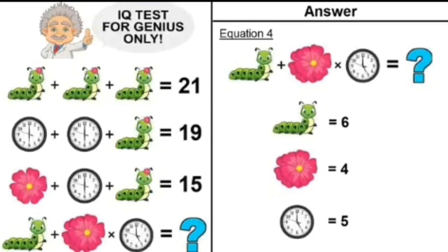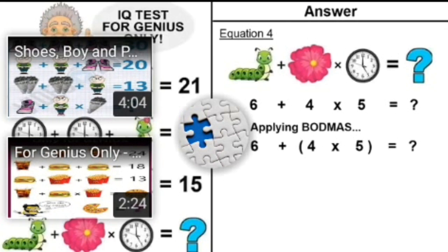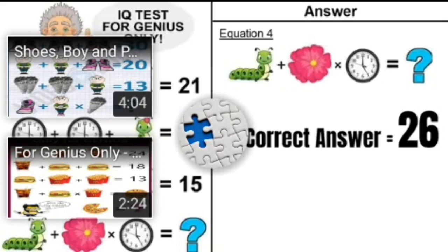Putting all those values into equation number 4: caterpillar with 6 sphericals (6) plus 2 flowers (4) times clock with time 5 (5). Applying BODMAS — multiplication first: 4 times 5 equals 20, then plus 6 equals 26. So the correct answer to this puzzle is 26. Hope everyone liked this!